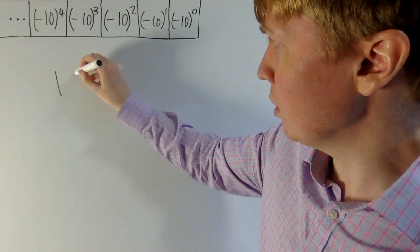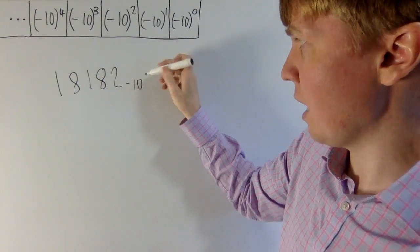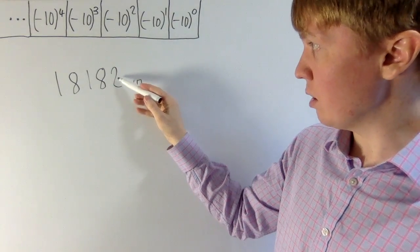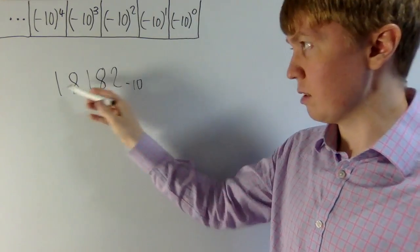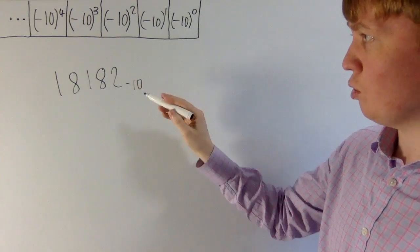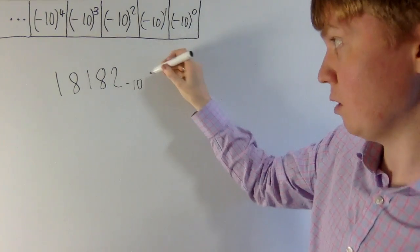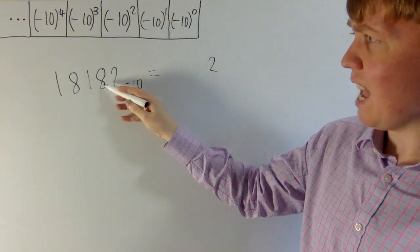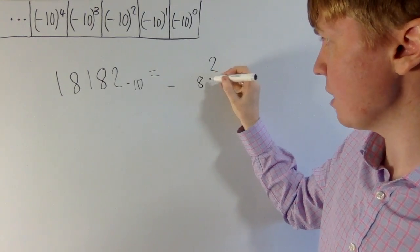So if we just pick one, let's go with 1 8 1 8 2 in base minus 10. What does this actually mean? In base 10, you'd know that this is 2 ones, 8 tens, 1 hundred, 8 thousands, and then 1 lot of 10,000. But in base minus 10, this 2 still represents 1s, so it's minus 10 to the power of 0, giving a contribution of 2. Then this 8, instead of representing 80, actually gives us a contribution of minus 80.